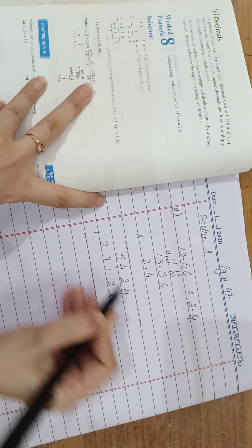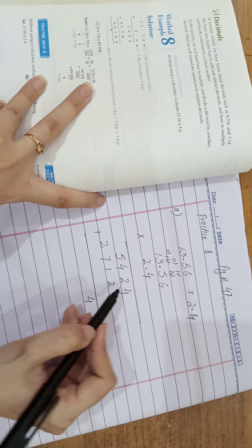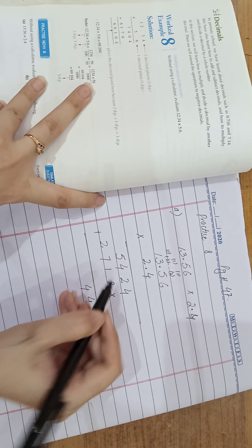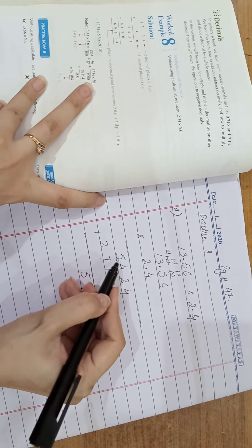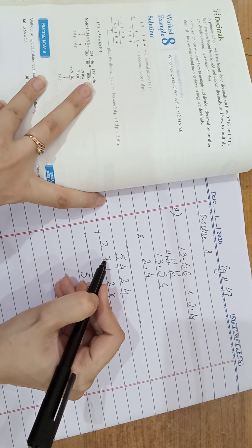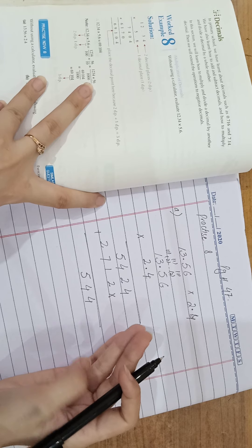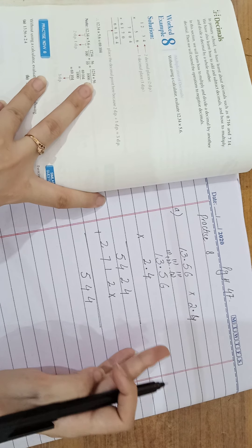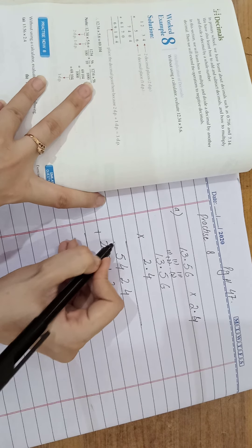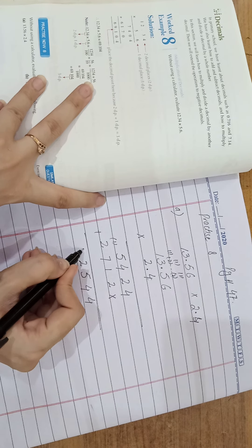Now add them, these two values. 2 plus 2 is 4. 4 plus 1 is 5. 5 plus 7 is 12. 2, and 1 is carry. And there is 3.